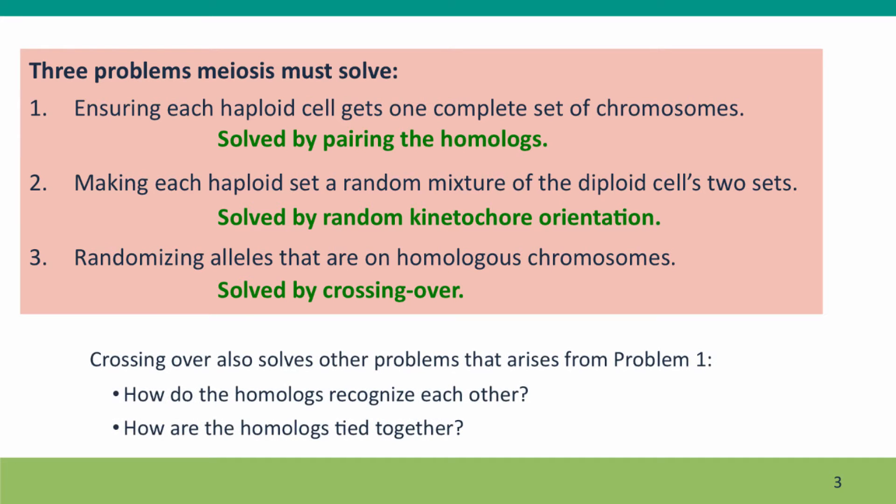The final problem — randomizing alleles that are on the same homologous chromosome — is solved by crossing over. Crossing over also solves a couple of other problems: how do the homologs recognize each other when they pair up, and how are they tied together so they don't come apart too soon?